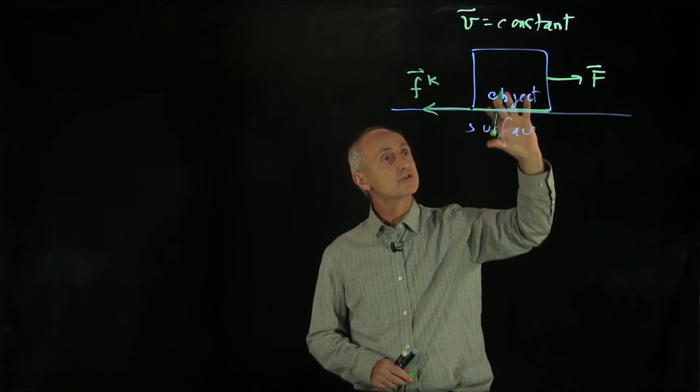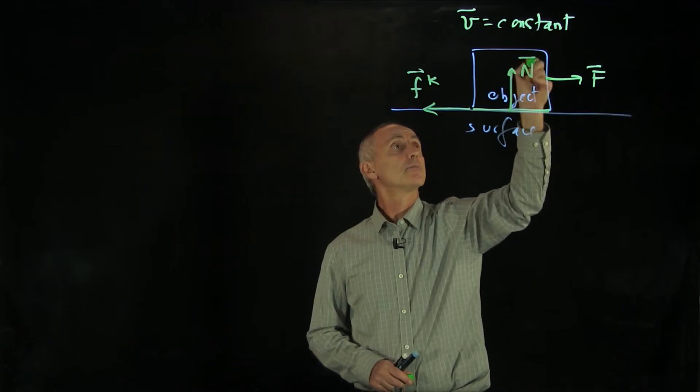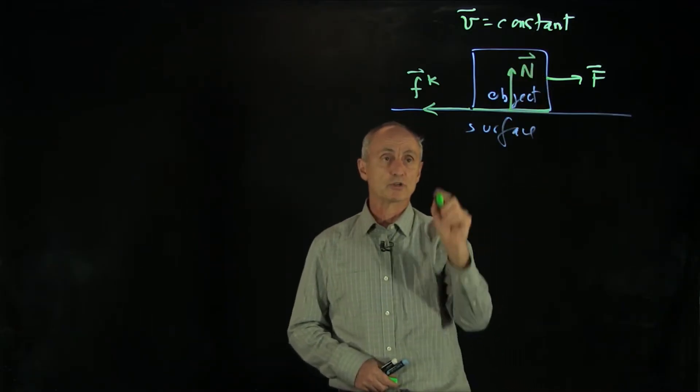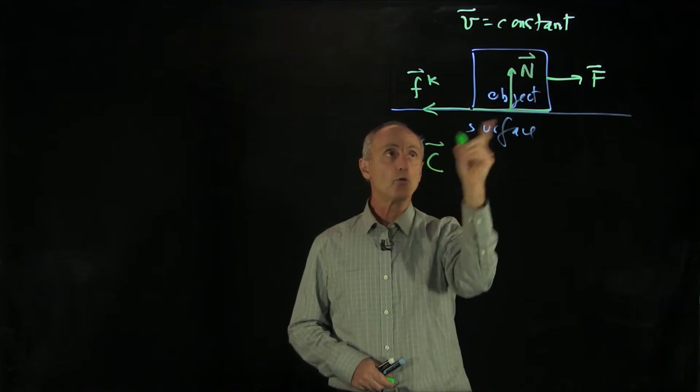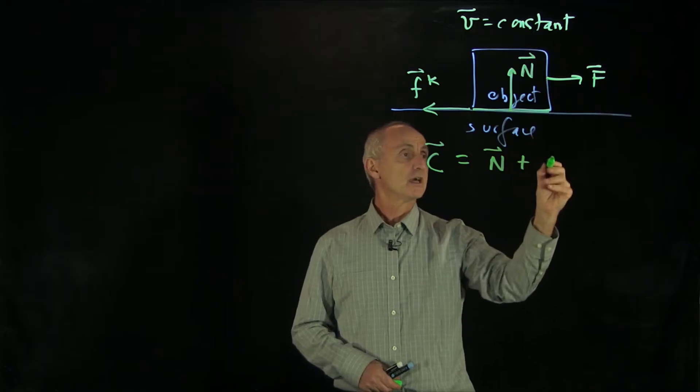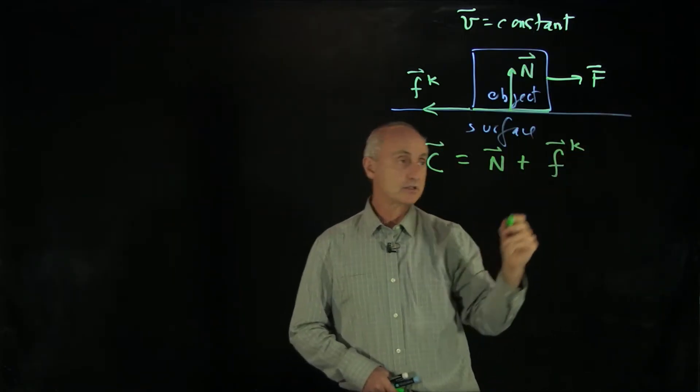The object is also pressing down on the surface. The surface is pressing up on the object. And so there's another perpendicular force to the surface, which is referred to as the normal force. And the total vector sum of these two forces, the perpendicular part, the normal force, and the tangential part, is referred to as the contact force.